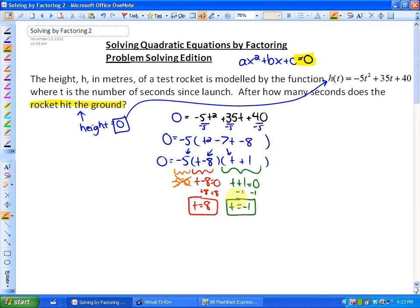Since this is a word problem, we need to ask ourselves, do these answers make sense? Does it make sense that the time could be 8 seconds? Absolutely. How about negative 1? In this case, no, because we can't go back in time, this does not make sense. We can't have a negative in this particular solution, so our only solution will be after 8 seconds.